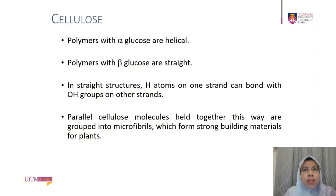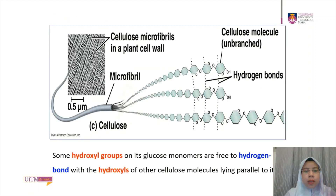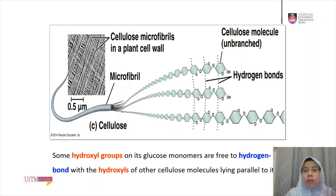Cellulose is never branched, and some hydroxyl groups on its glucose monomers are free to hydrogen bond with hydroxyl groups of other cellulose molecules lying parallel to it. These pairs of cellulose molecules held together are grouped into microfibrils. The hydroxyl groups on the glucose monomers hydrogen bond with the hydroxyl groups of other cellulose molecules, forming cable-like microfibrils which are strong building material for plants.